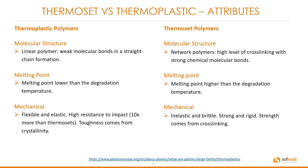Mechanical attributes. Thermoplastics are flexible and elastic, with high resistance to impact — around 10 times more than thermosets. Toughness comes from crystallinity. Thermoset is inelastic and brittle; however, it is strong and rigid. Strength comes from the cross-linking molecular structure.